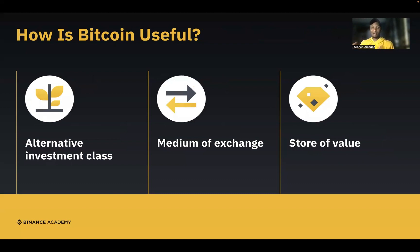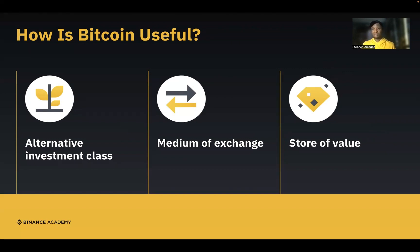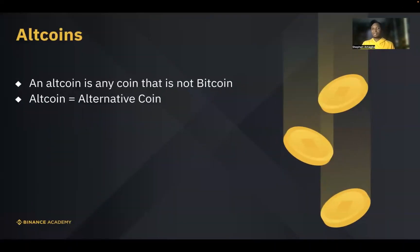Now let's talk about why bitcoin is useful. This is not financial advice — we only educate here. But because of bitcoin's scarce nature and the relationship between its supply and demand, it is believed bitcoin can serve as an alternative investment class for storing value. We can also use it as a medium of exchange — you can use bitcoin for payments, to subscribe for services, buy items, or pay for goods and services through platforms like the Binance app, just like you would with fiat currencies.